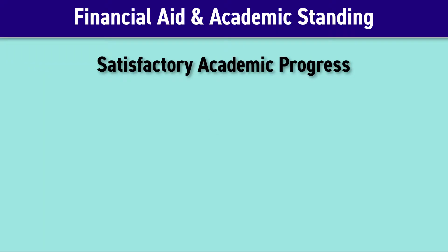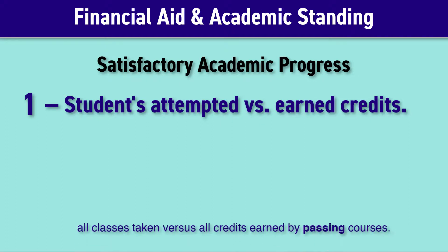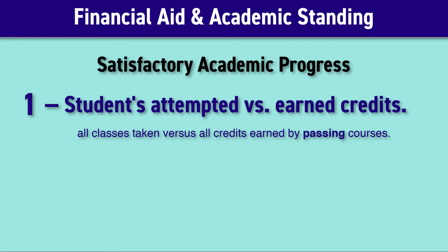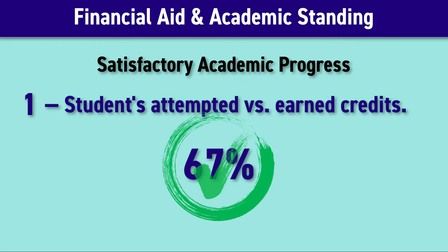The first factor that determines satisfactory academic progress is a student's attempted versus earned credits. Think about it for a moment — what classes count towards your attempted credits? If you answered all the courses that appear on your transcript, you're correct. The attempted credits are all the classes you've taken, and this is compared against the earned credits, which are only the courses you've received a passing grade for. You have to have passed 67% of the credits you've attempted to maintain financial aid.